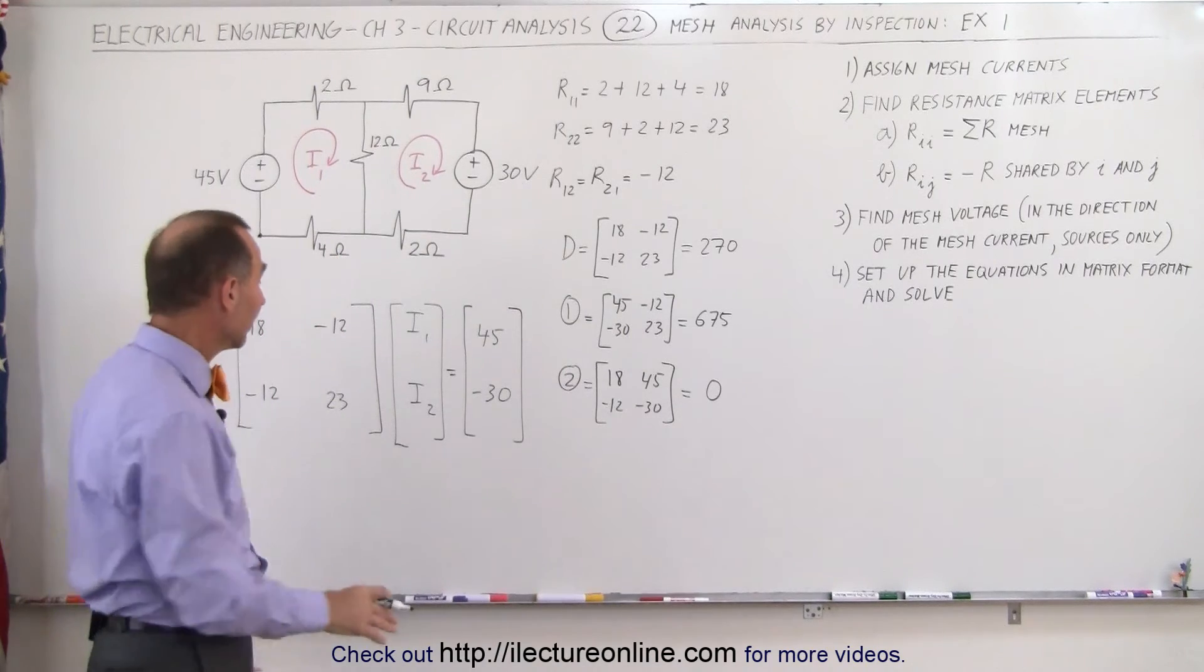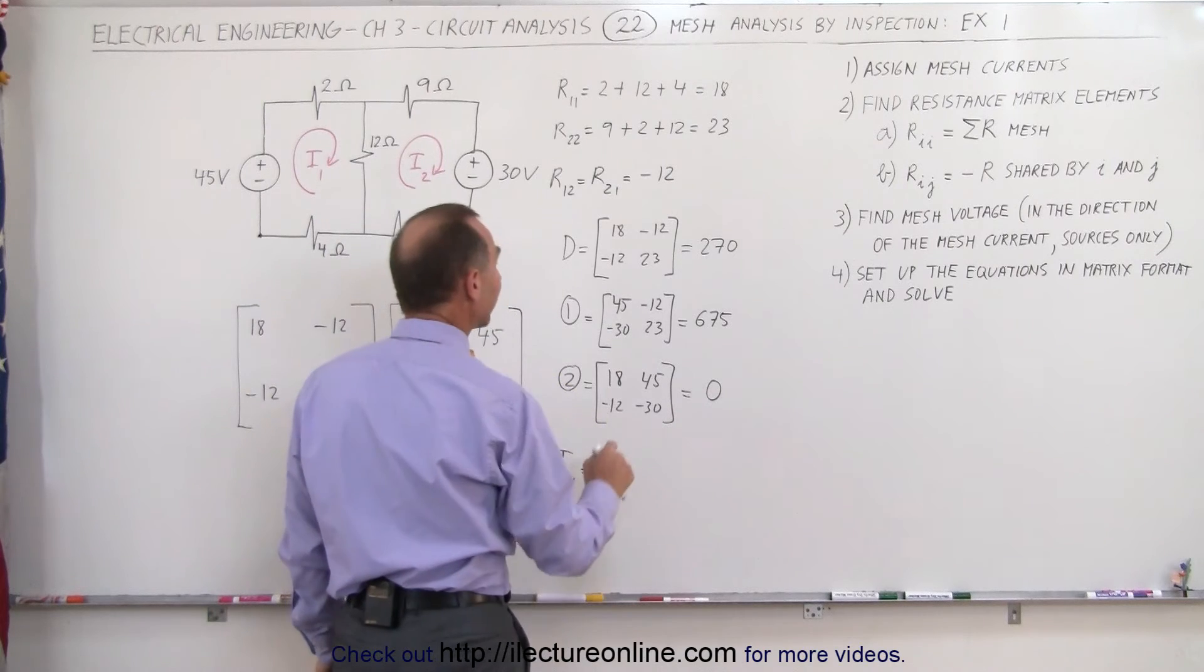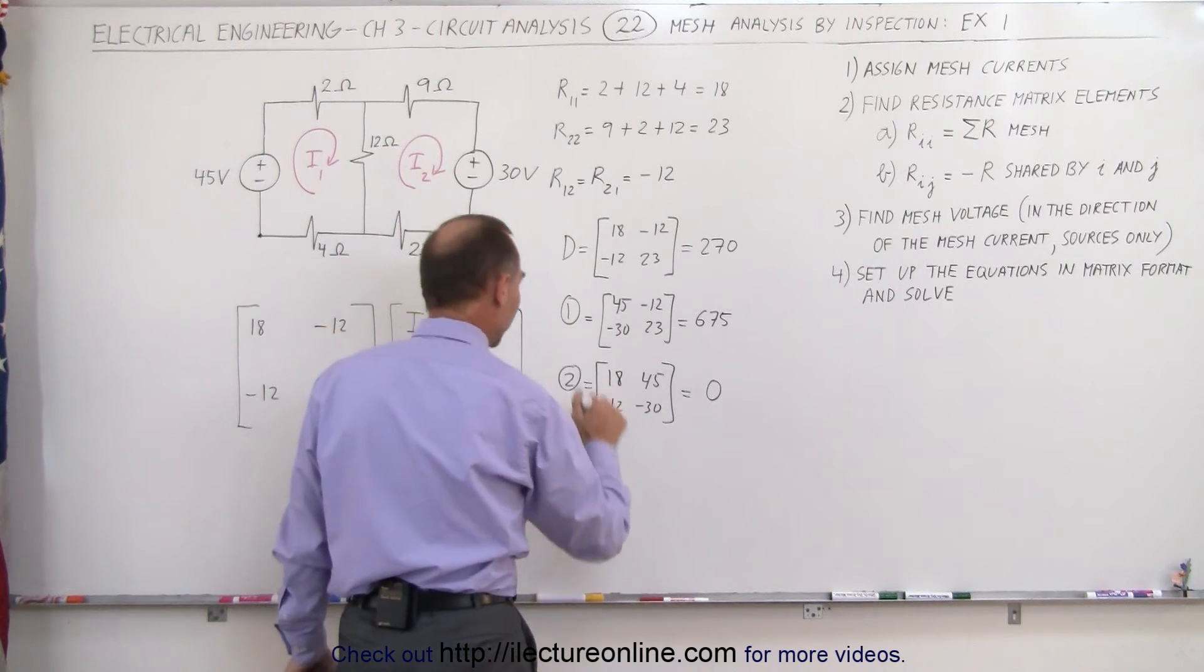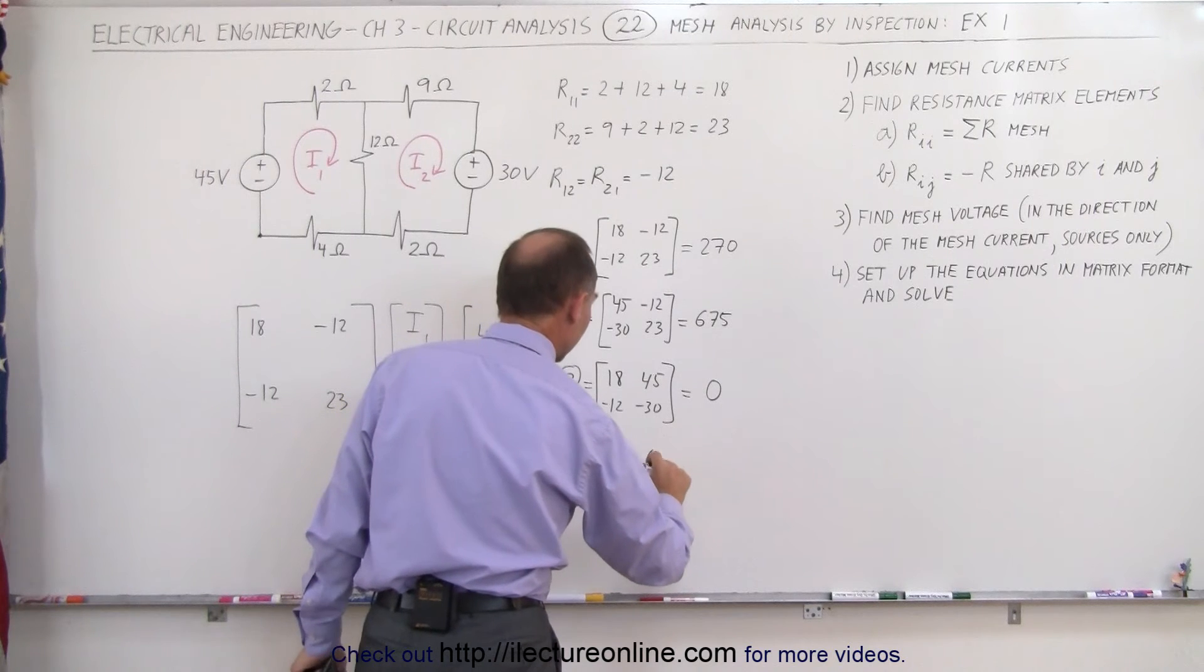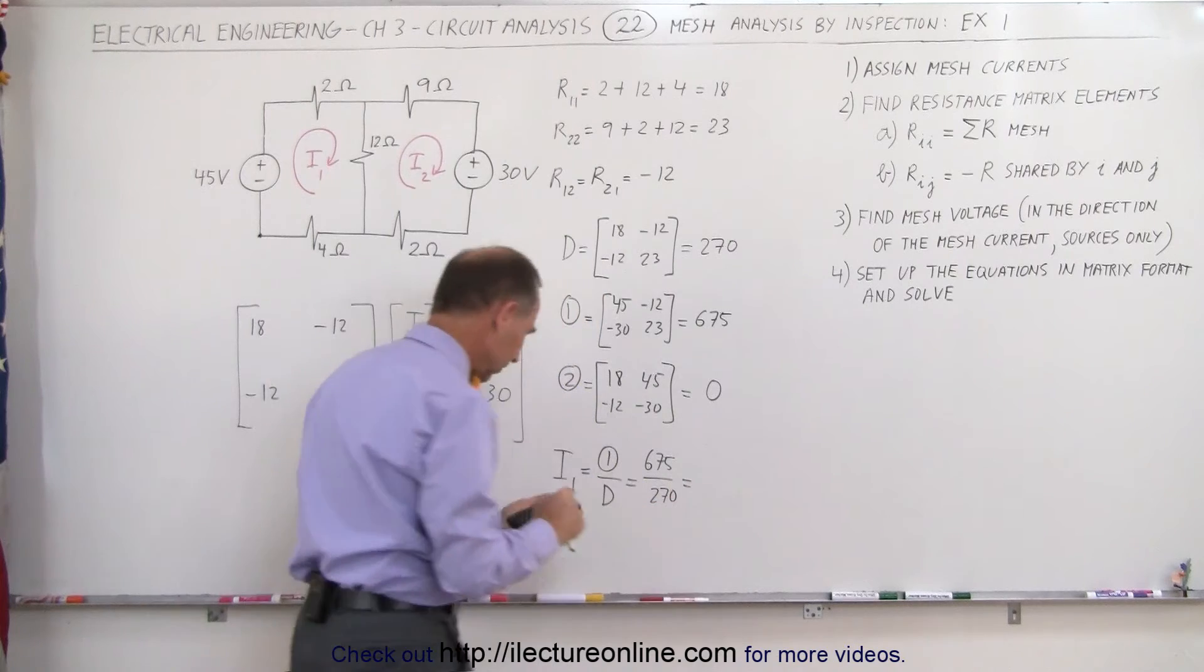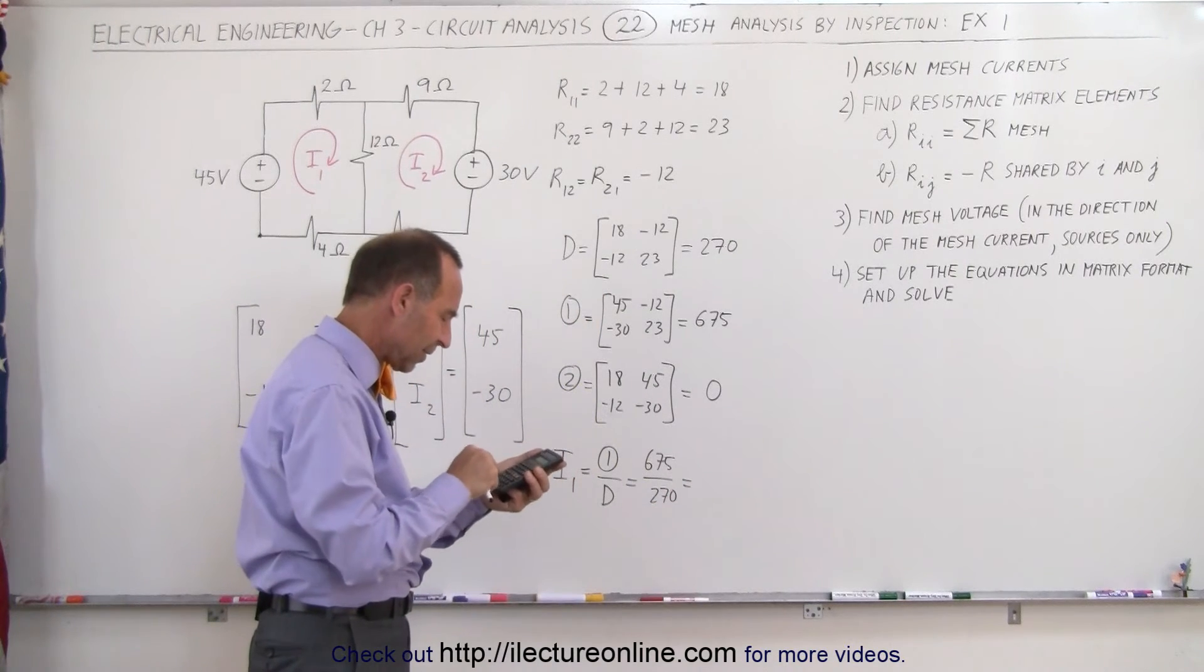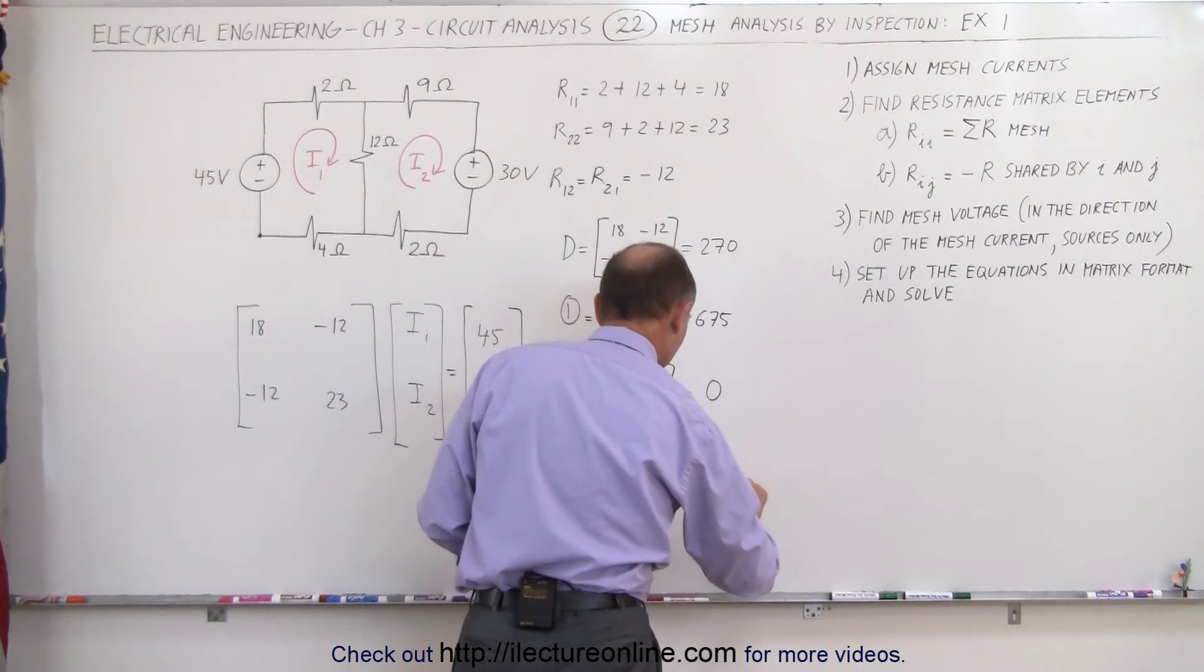Now to find the two mesh currents, I1 can be found by taking the result of the first matrix and dividing it by the determinant. In this case that's 675 divided by 270, and we get 2.5, and that would be amps. So there's 2.5 amps in the first mesh here.